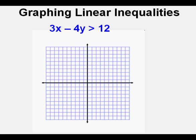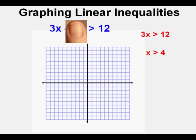Let's graph this linear inequality: 3x minus 4y is greater than 12. I like to graph lines in standard form by finding the x and y intercepts. To find the x-intercept of this boundary line, we can cover the y term with our thumb and see what's left. We have 3x is greater than 12, so we divide both sides by 3 and get x is greater than 4. We mark the x-intercept at x equals 4.